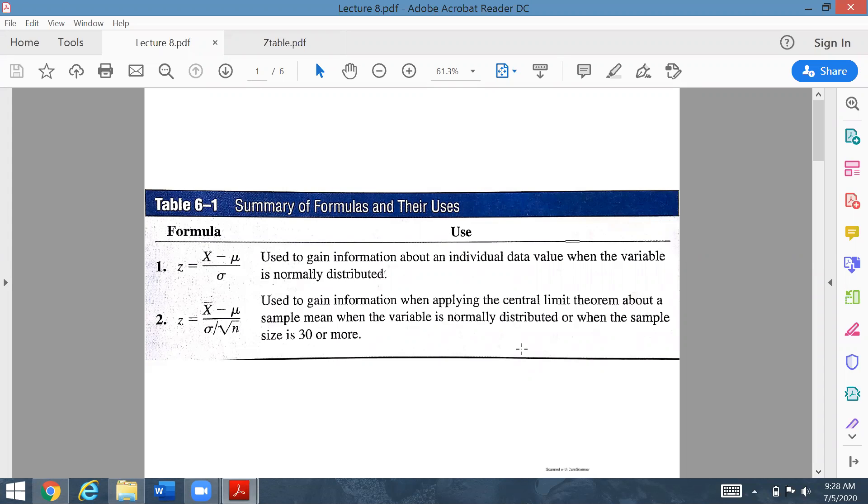The population should always be a normal distribution. Now in the second case which you are going to follow in today's lecture, this is z equals x bar minus mu upon sigma over root n. This denominator is known as standard error.